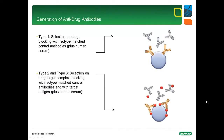In general terms, we apply different processes of antibody selection, depending on the type of anti-drug antibody we want to select. For type 1, we use the protocol that I explained in the slide before. For type 2 and 3, we perform the antibody selection on the drug target complex. As blockers, we add again isotype matched control antibodies. Further, we add the drug target to make sure we don't select target-specific antibodies.